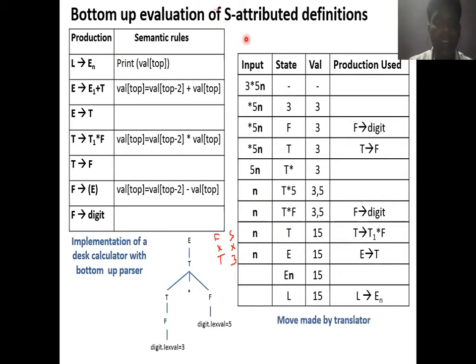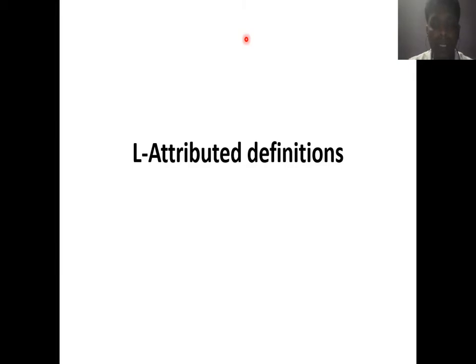Now we are moving to the L attribute definition. The context-free grammar is not only used for parsing or syntax analysis — it is also used to determine whether a particular input string is meaningfully correct. For that purpose, to find out the meaning, we assign some attribute to each grammar symbol. There are two kinds of attributes: synthesized attribute and inherited attribute.